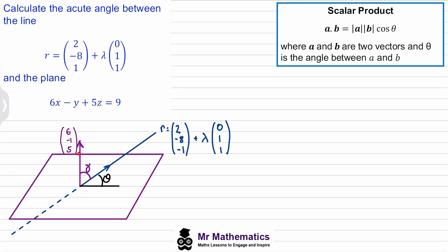You can see that we have both factors pointing away from this angle. So if we make our normal vector vector A, and the direction of the line vector B, we can substitute each of them into this equation, and this will give us alpha.